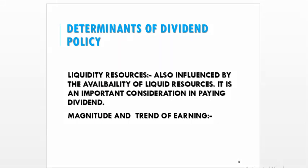The declaration of dividend is also influenced by liquidity resources. Once the dividend is declared, the company has to make payment within 30 days, so the company's decision to pay dividend is influenced by the availability of liquid resources. If the company has sufficient liquid resources it should declare the dividend; otherwise it should not, because liquidity resources are an important factor in paying dividend.